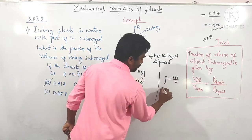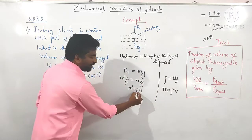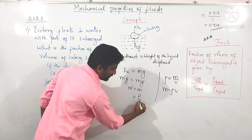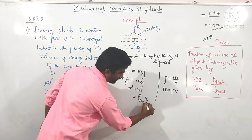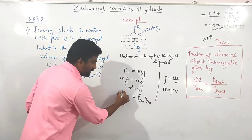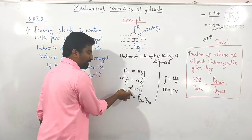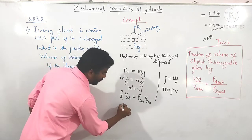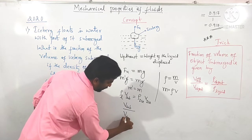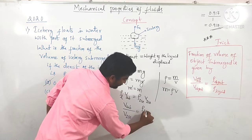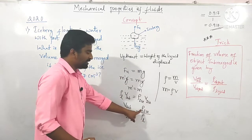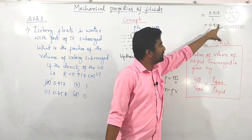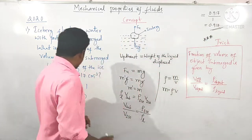Since density equals mass divided by volume, mass equals density into volume. So the mass of the object equals density of ice into volume of ice, and the mass of liquid displaced equals density of the liquid into volume of the object submerged. Therefore, volume submerged divided by volume of object equals density of ice divided by density of liquid, which is 0.917 divided by 1 = 0.917. Option A is correct.